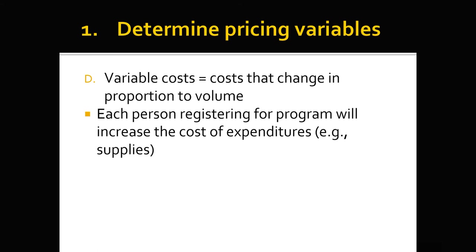Then there are variable costs — costs that change in proportion to volume. Each person registering for the program will increase the cost of expenditures. For example, supplies: if I'm running a soccer clinic, my variable costs are team t-shirts, soccer balls, and the drill booklet for each participant. If I have five participants, I need five t-shirts; if I have 33 participants, I need 33 t-shirts — so it's variable.